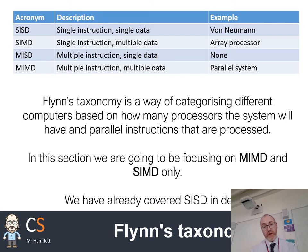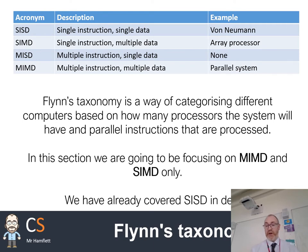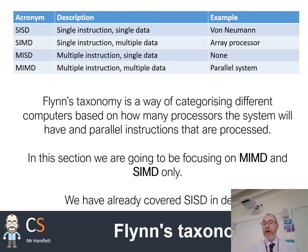For example, consider a 3D model where all the vertices might need to be translated, moved, or scaled. We want to do the exact same calculation on each and every single vertex — there might be hundreds in a really detailed model. In a serial Single Instruction, Single Data approach, we'd have to process each vertex individually, one at a time. With Single Instruction, Multiple Data, we can do them all at once.